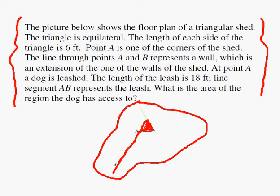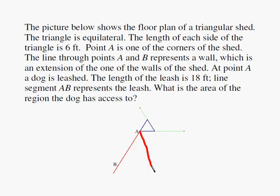Now the dog is leashed to point A. The length of the leash is 18 feet and the leash is flexible so the dog can move around the shed but cannot go through the shed and we need to find out how much area the dog has access to.